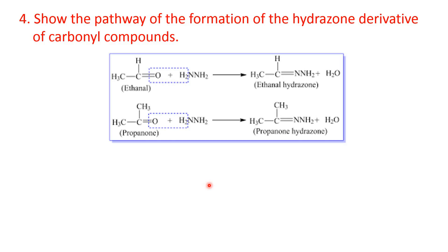The condensation reaction takes place by addition followed by removal of a smaller molecule — here, water. For example, ethanal reacts with hydrazine: the oxygen atom of the carbonyl compound and the two hydrogen atoms attached to the nitrogen atom of the hydrazine are removed as water, and the carbonyl carbon and nitrogen join by a double bond, forming ethanal hydrazone. Similarly, propanone gives propanone hydrazone.